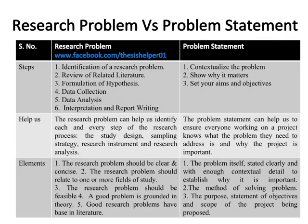The problem statement has three separate steps to write it clearly and effectively. The first step is to contextualise the problem. The second step is to show why it matters, and the third step is to set your aims and objectives. The research problem can help us identify each and every step of the research process.